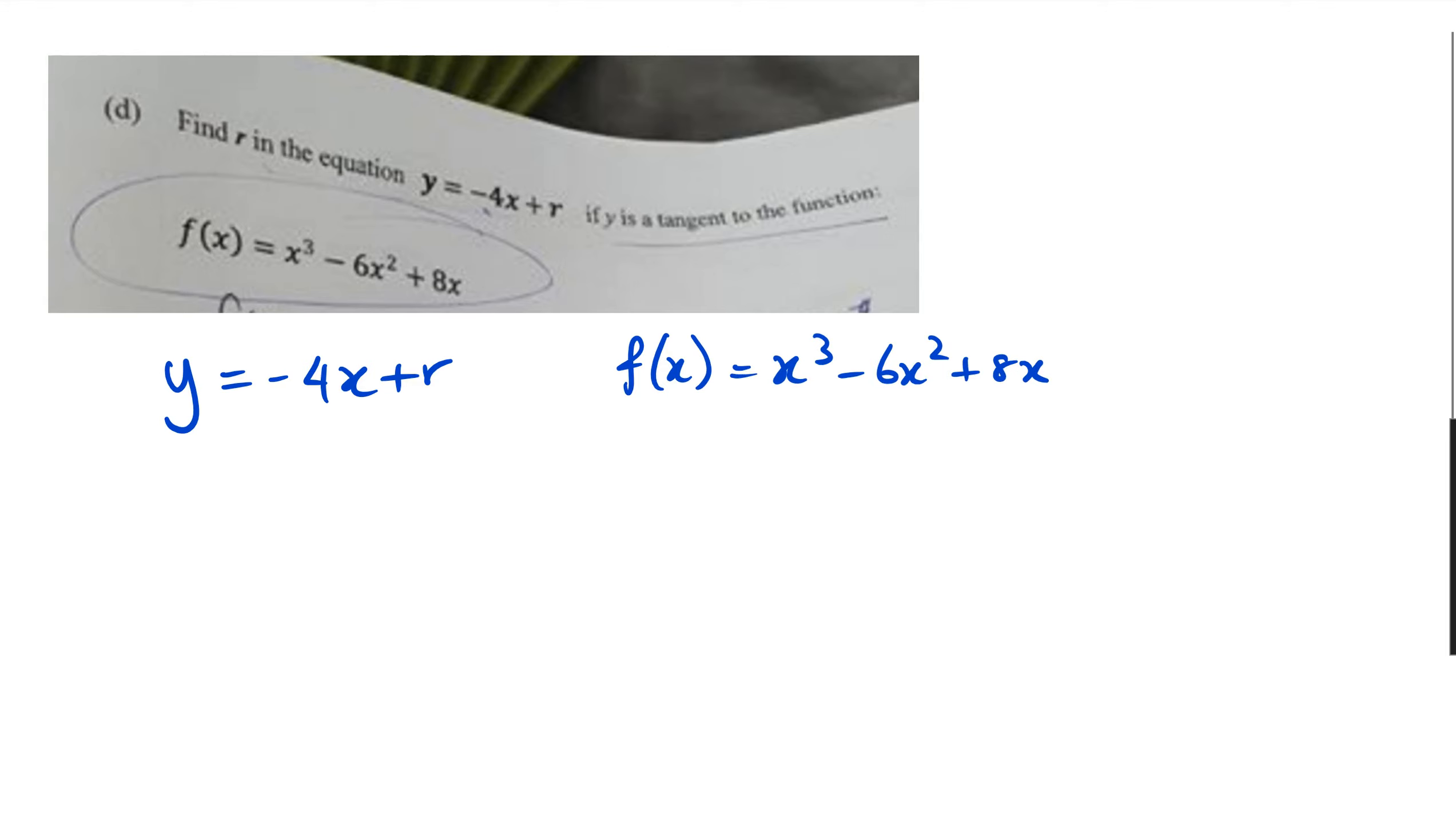I'm going to try and figure out what r is, and we also know that this right here is the tangent. Let me just show you guys what this roughly looks like. The first idea you need to understand is that this is a positive cubic, so it's going to look something like this. What we also know is that this tangent here is y = -4x + r, but the only part I'm interested in is the tangent's gradient, which equals negative 4.